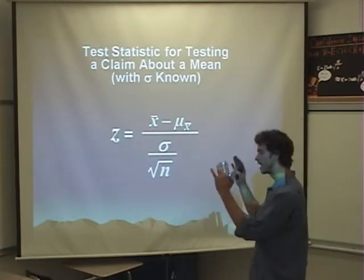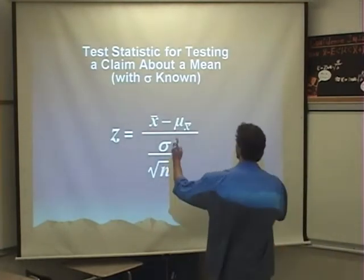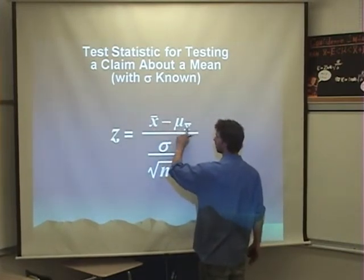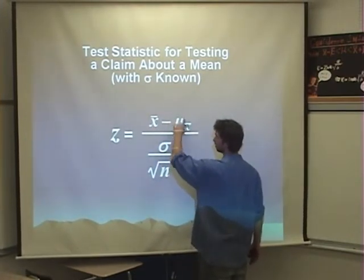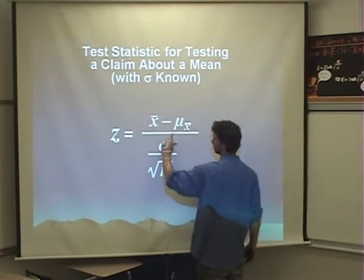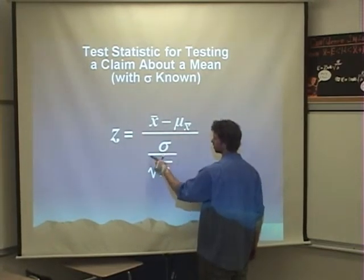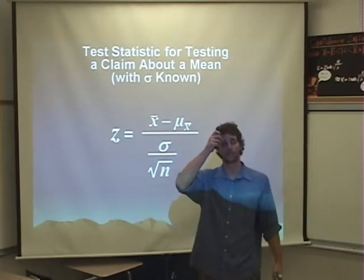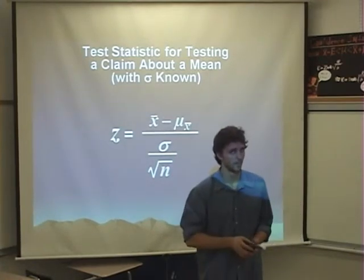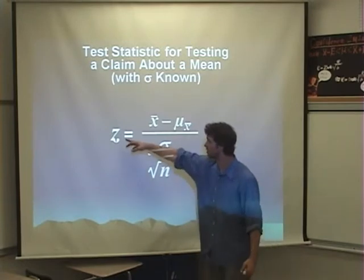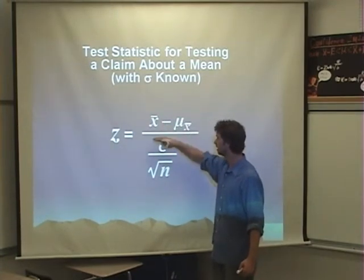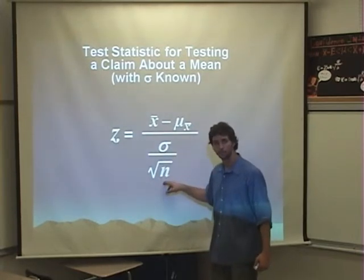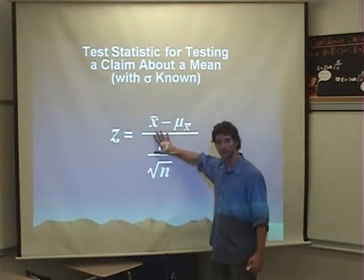Here is our test statistic. Z equals x-bar, not p, minus mu x-bar, which is mu, not p, not p-hat, not p, divided by the square root of sigma divided by the square root of n. This is the only thing that will change in this hypothesis test. Remember, last time, the test statistic was Z equals p-hat minus p divided by the square root of pq divided by n. So that's the only thing that changes.